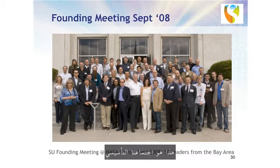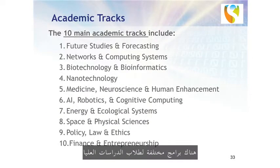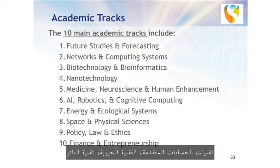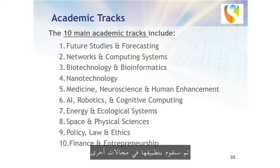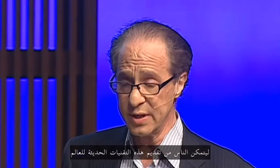This is being announced today. It will be permanently headquartered in Silicon Valley at the NASA Ames Research Center. There are different programs for graduate students and for executives at different companies. The first six tracks — artificial intelligence, advanced computing technologies, biotechnology, nanotechnology — are the different core areas of information technology. And then we're going to apply them to other areas like energy, ecology, policy, law and ethics, and entrepreneurship, so that people can bring these new technologies to the world.